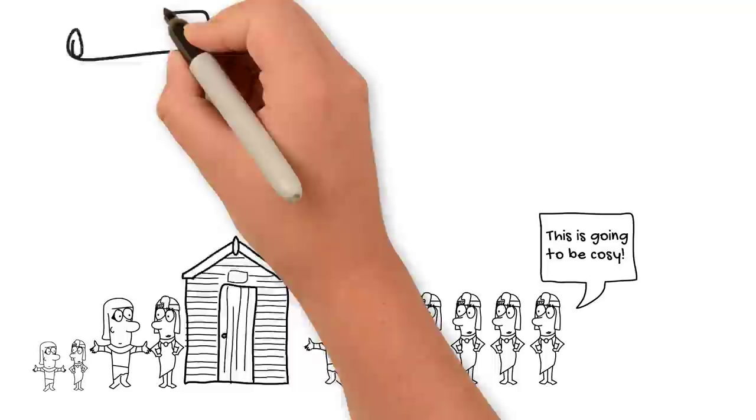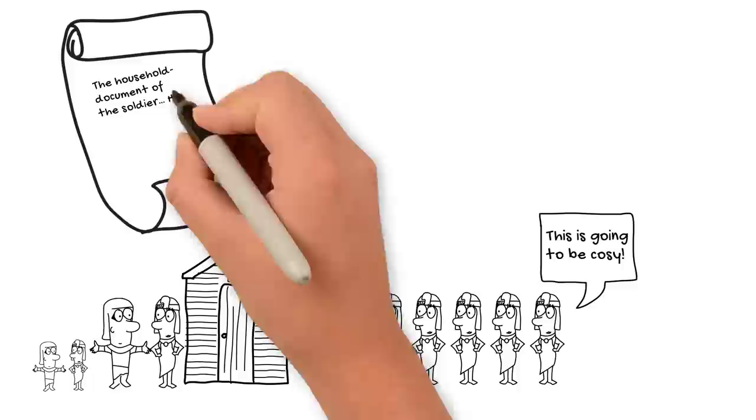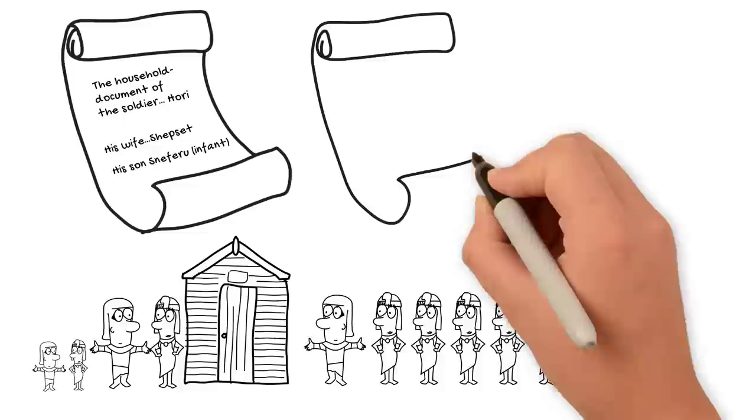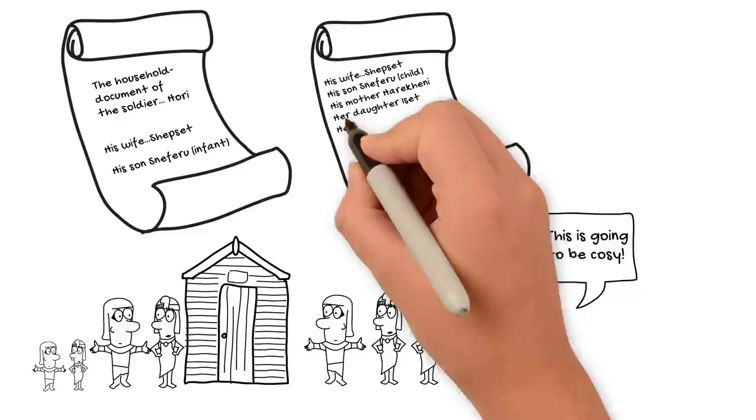For example, a 13th dynasty census record from the site of Lahoon features the family of a man named Hori. Initially we have a record that shows Hori lived alone with just his wife Shepset and his son Sneferu. But a later record for the same household shows an addition of six other women including his mother and also his sisters and nieces.